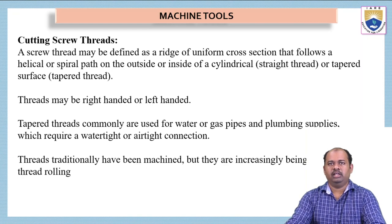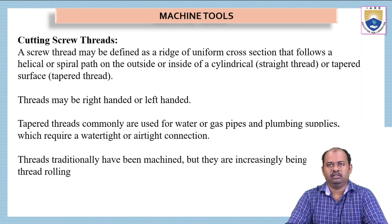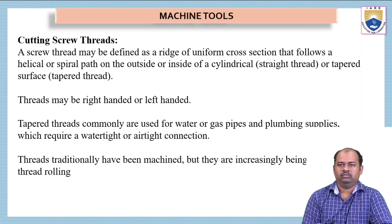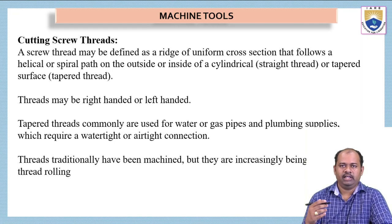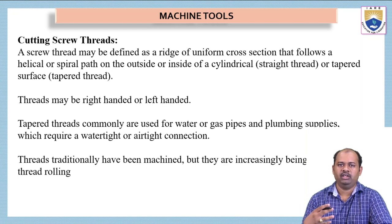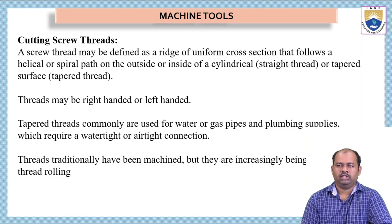A screw thread may be defined as a ridge of uniform cross section that follows a helical or spiral path on the outside or inside of a cylinder or taper surface. So, screw thread is a helical or spiral path which is created on the outside surface of a cylinder or inside surface of a mechanical part, and sometimes we have to do this on a taper surface also.